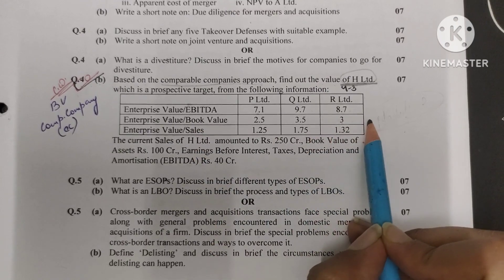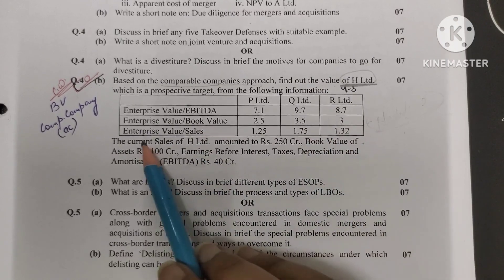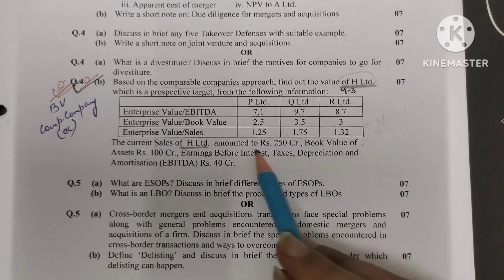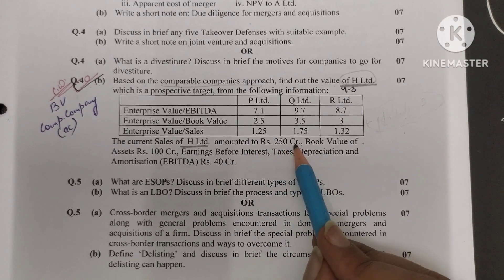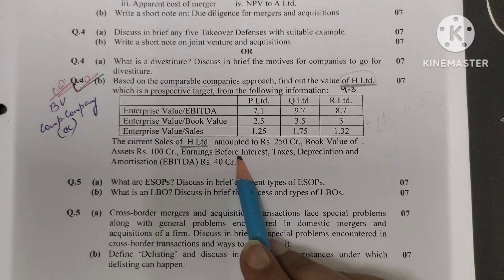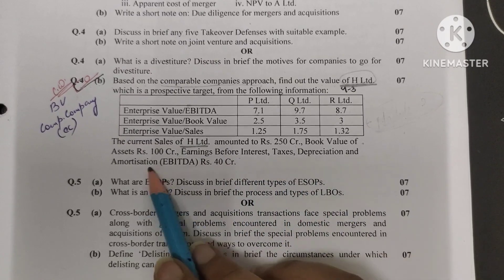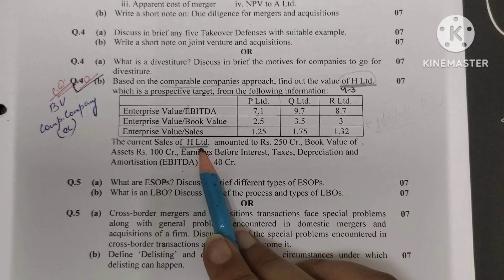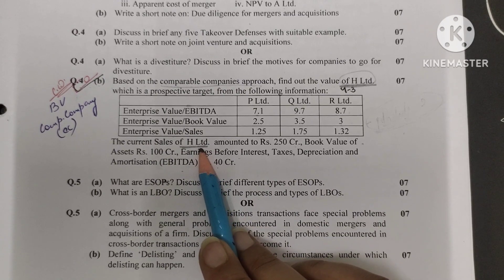Same way, book value is almost near, and sales. Now the current sales of H Limited, H Limited is the main company, amounted to 250 crore. Book value of assets is 100 crore. Earnings before interest, tax, depreciation and amortization is 40 crore. H Limited's value is also given, so we'll draw a table and then we will start.